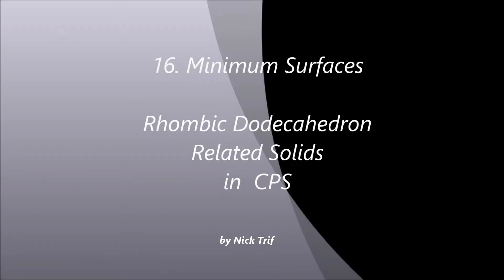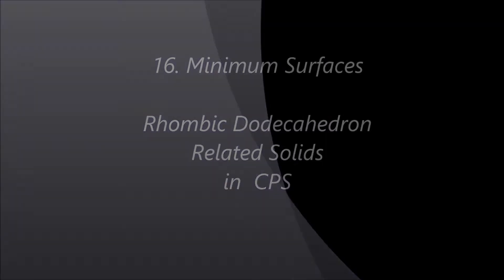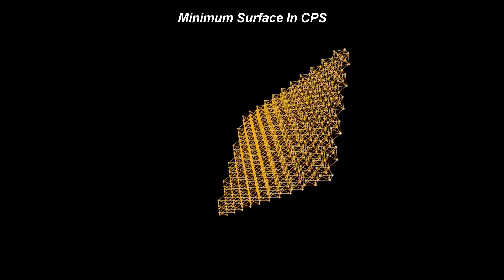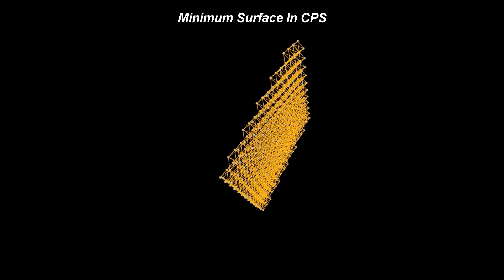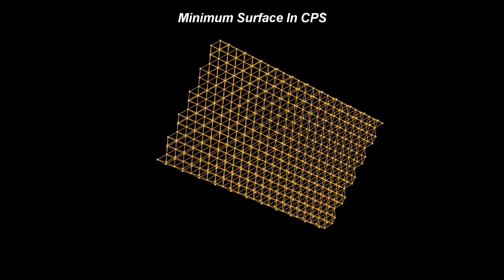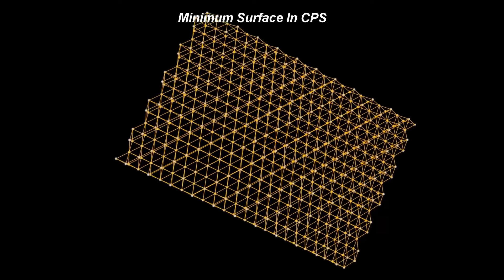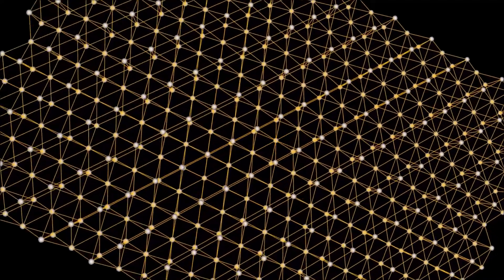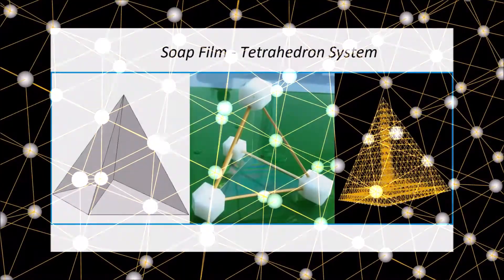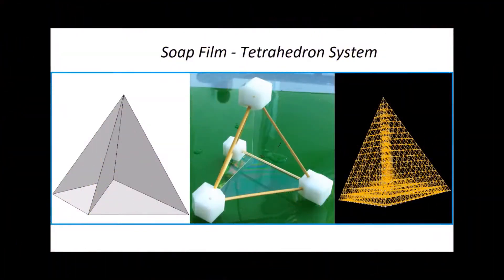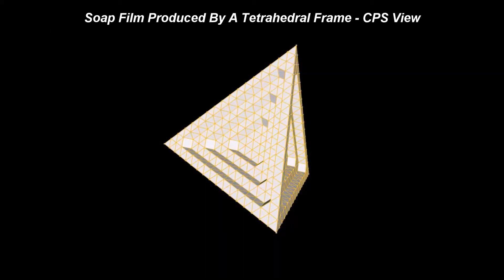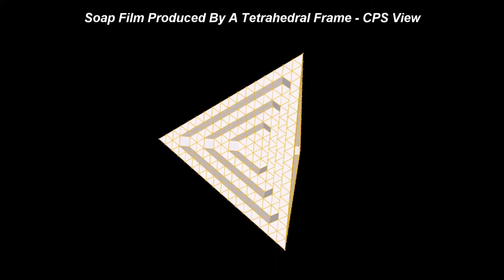Section 16: Minimum surfaces. Rhombicododecahedron-related solids in CPS. We have already seen how the minimum surfaces manifest in CPS. Two fundamental structures stand out, showing the following scenarios.